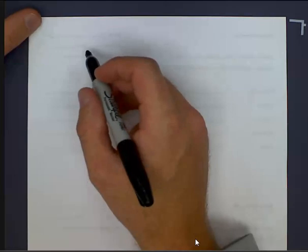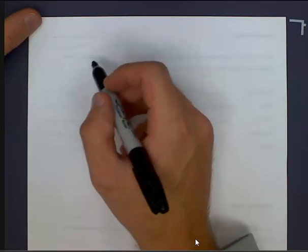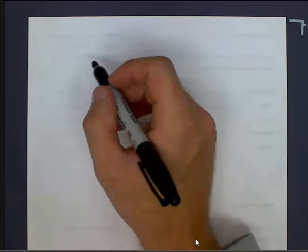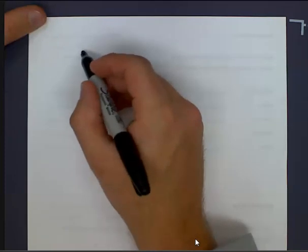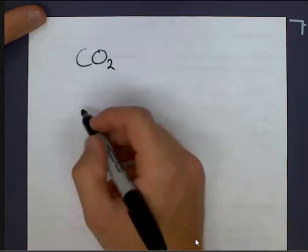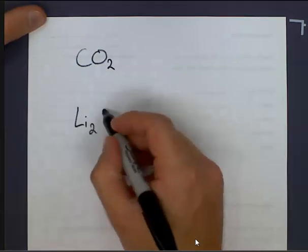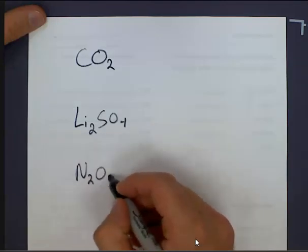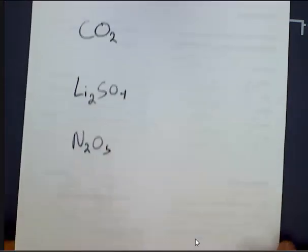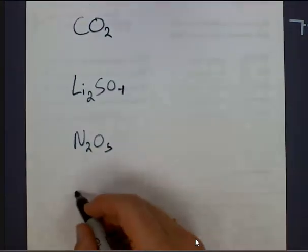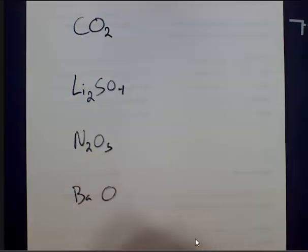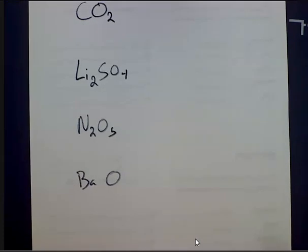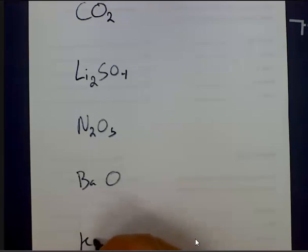I'm going to give you a list of about 10 compounds, and we're going to go through a thought process to try and figure out how to name each one. So we're going to start off CO2, Li2SO4, N2O5. Let me scoot this up here so we have a little bit of room. We've got BaO and finally KNO2.